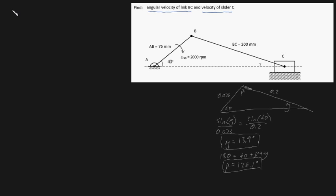Let's start off with a relative motion formula. We know that the velocity of B relative to A is going to be equal to the velocity of B minus the velocity of A. In this particular case, the velocity of A is going to be equal to zero because this pin isn't moving anywhere. So we can rewrite this saying that the velocity of B is going to be equal to the velocity of B relative to A.